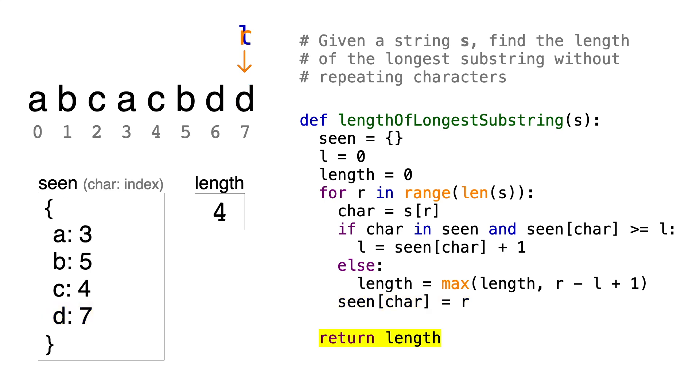And remember, since there's only one loop that goes through the string once, and since hash table lookups run in constant time, this algorithm ends up running in O of n time.